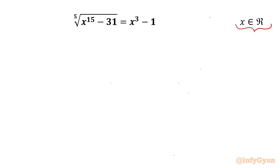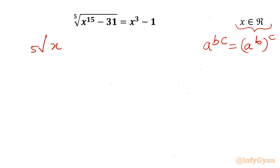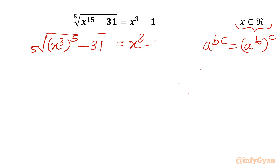Let's get started. I will begin with the most powerful exponent law: a to the power bc can be written as (a to the power b) whole to the power c. So I can write the 5th root of x to the power (3 times 5), and using that property, rewrite it as the 5th root of (x cubed) to the power 5, minus 31, equal to x cubed minus 1.